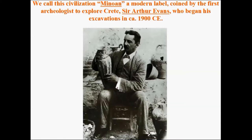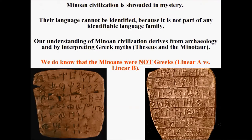Based on this myth and what Evans had found, Evans decided to label the culture that he was excavating as Minoan. Minoan civilization is very much mysterious to us, in part because although we have recovered — thanks to Arthur Evans and subsequent archaeologists — hundreds of clay tablets upon which is written a script, we have not yet deciphered that script. The Minoan script is referred to as Linear A.